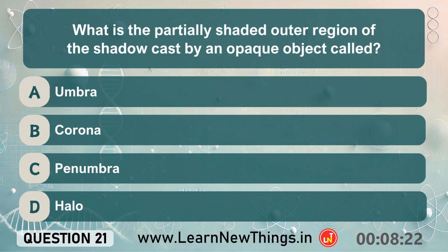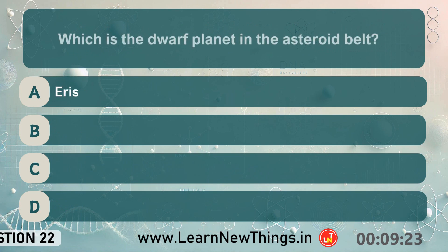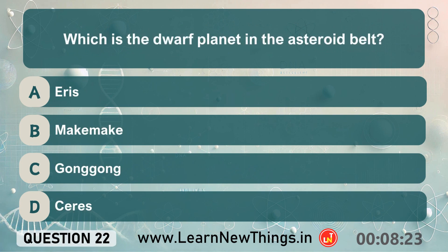What is the partially shaded outer region of the shadow cast by an opaque object called? Penumbra. Which is the dwarf planet in the asteroid belt? Ceres.